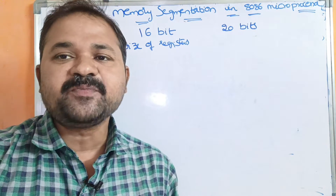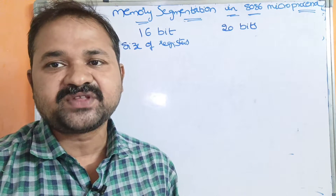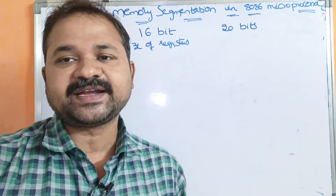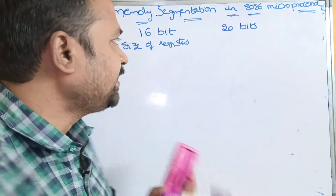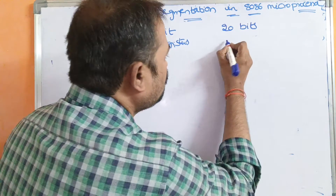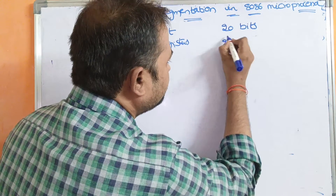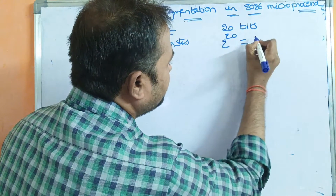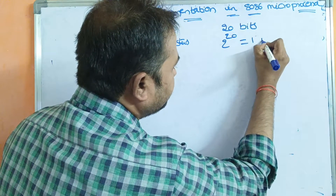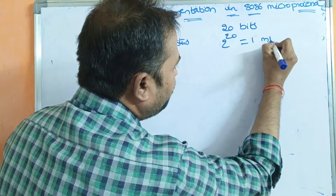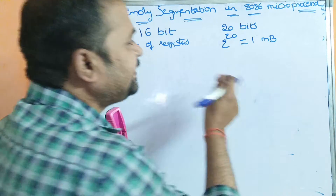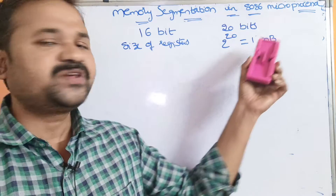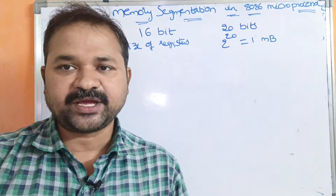So the maximum capacity of the physical memory — that is, the main memory — is 2 to the power of 20. 2 to the power of 20 means 1 megabyte. So 1 megabyte is the size of the main memory.